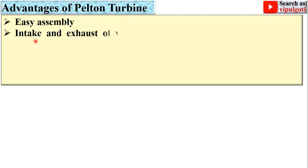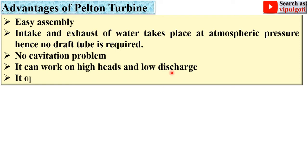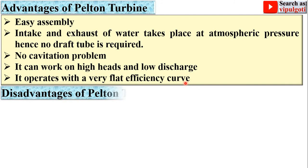Next: advantages of the Pelton turbine. Easy assembly. Intake and exhaust of water takes place at atmospheric pressure, so no draft tube is required. There is no cavitation problem in impulse turbines. It can work on high heads and low discharge. It operates with a very flat efficiency curve.